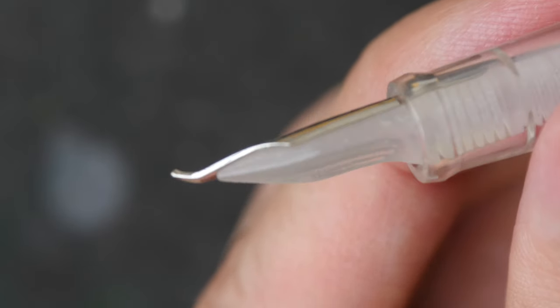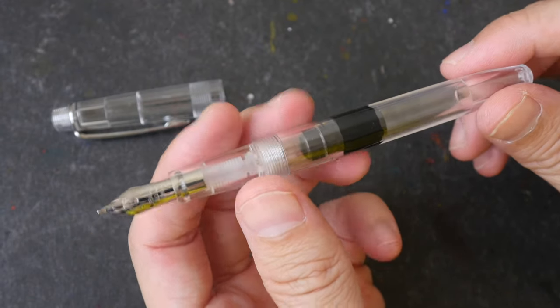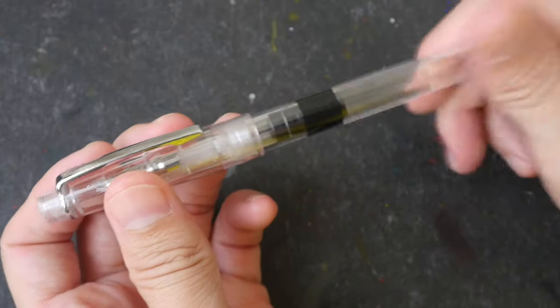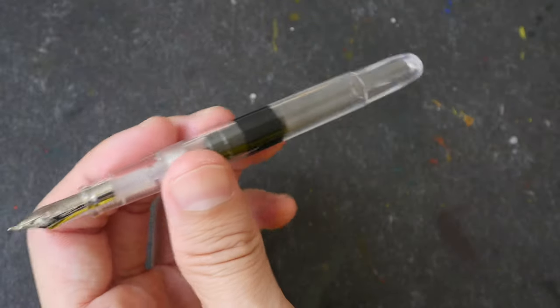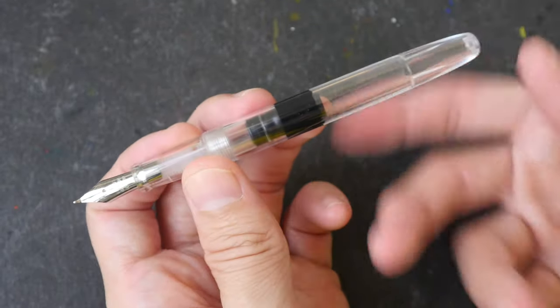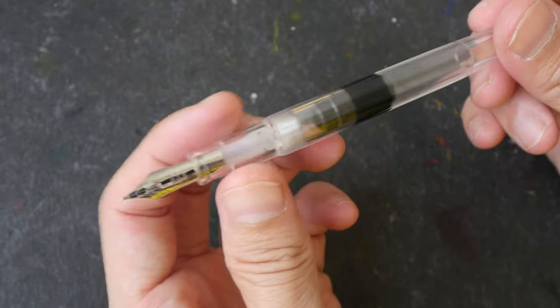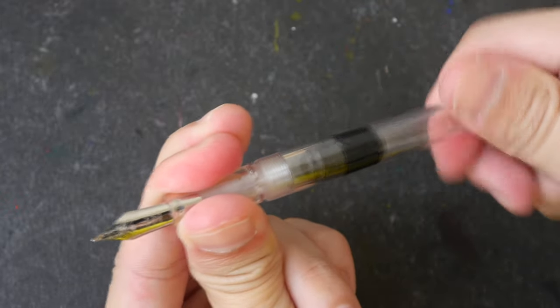The whole pen is made of plastic except for the metal nib and the pen clip here. This pen cap is the screw-on type, and this pen is only available in this color, the transparent demonstrator version.